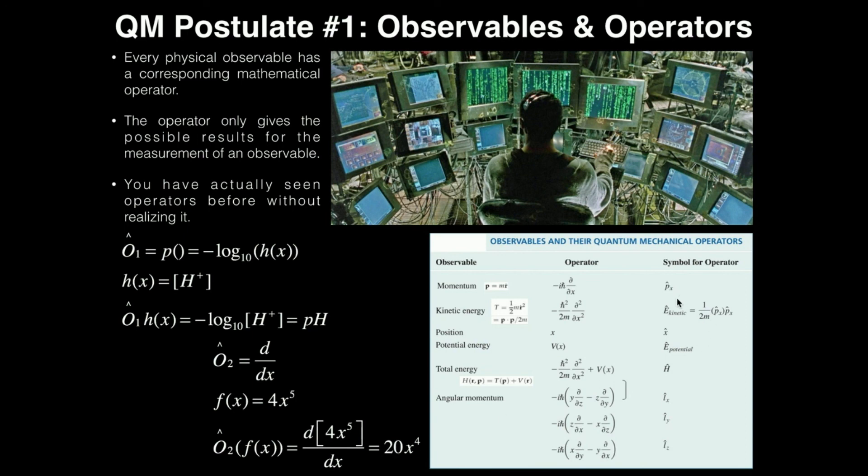So for example, if I wanted to use the px hat operator, I would put px hat in front of the function, and that would tell me to multiply the function times negative i h bar, and then take its first derivative with respect to x. And when we actually compute expectation values, we'll actually get some practice with that.